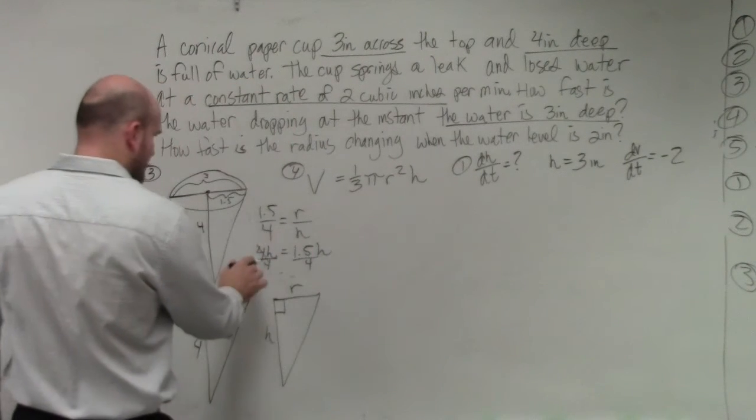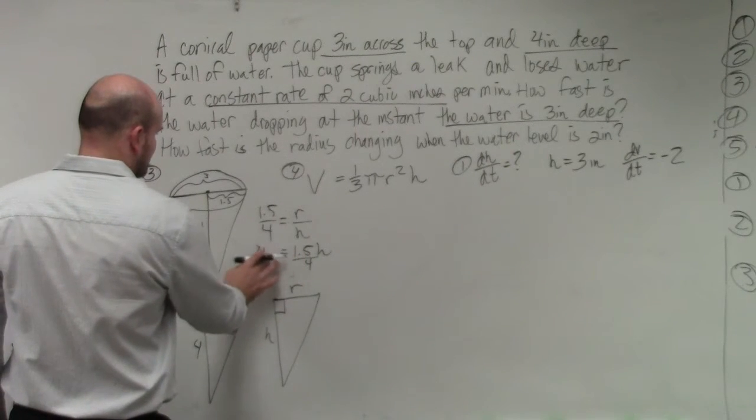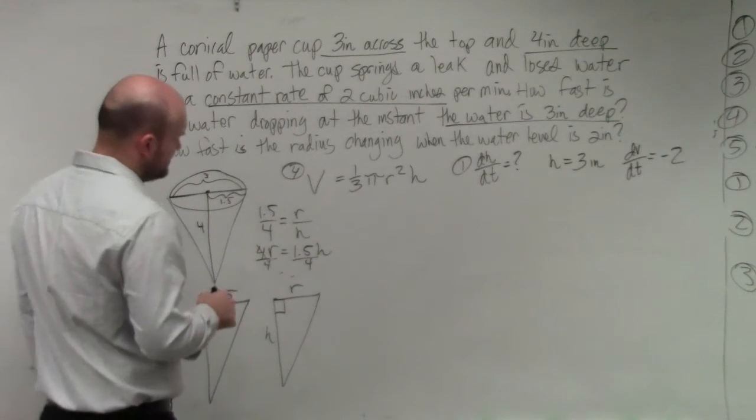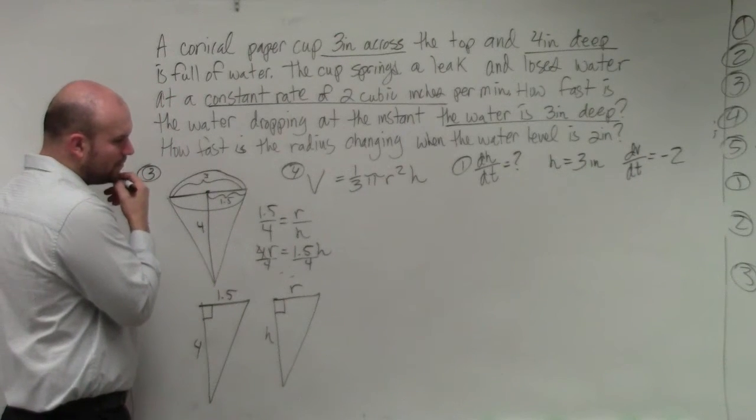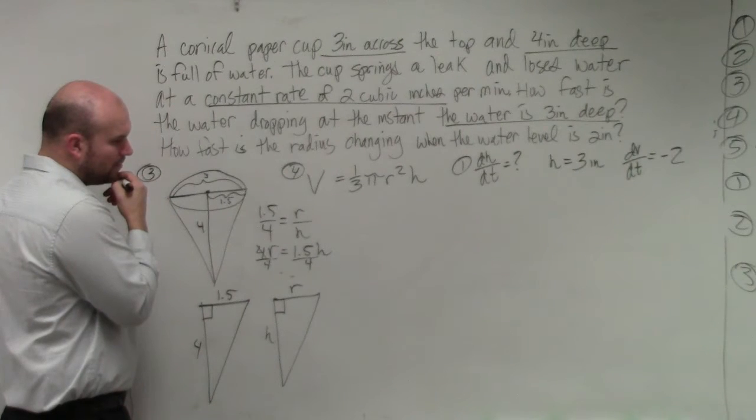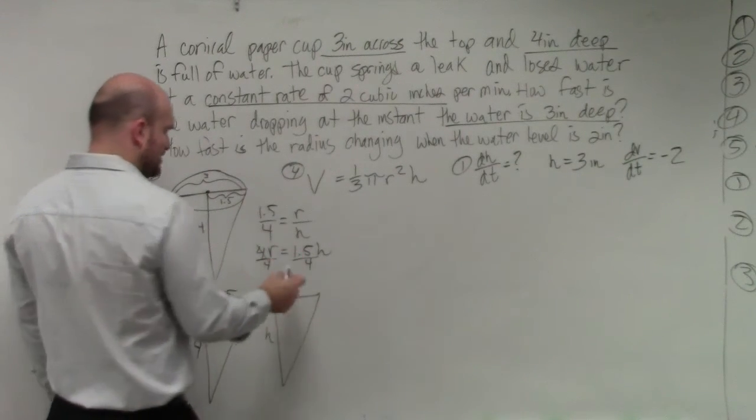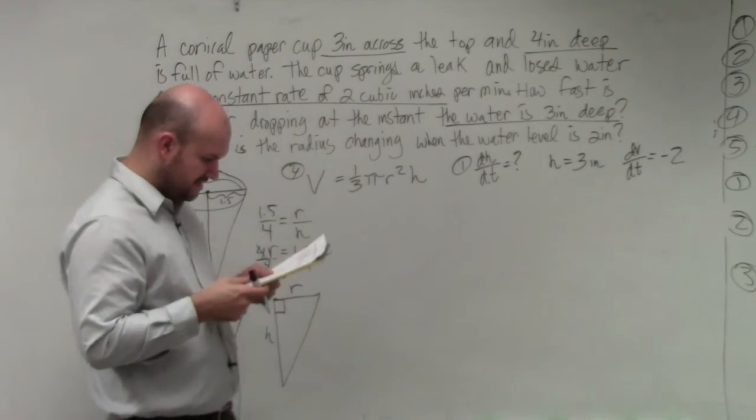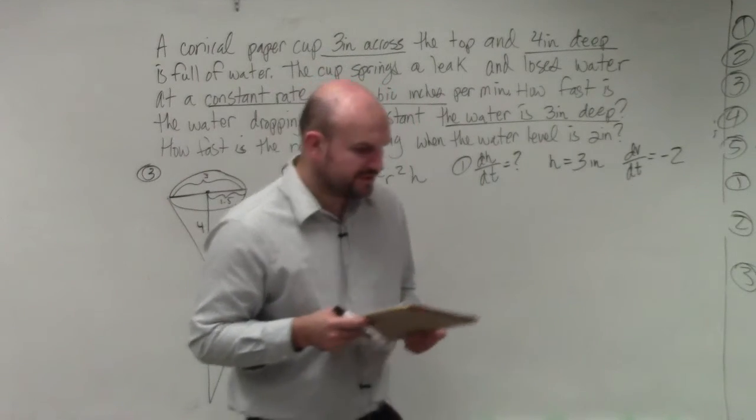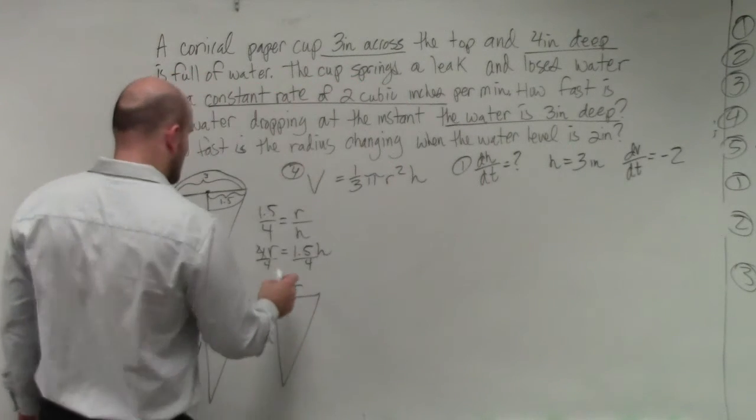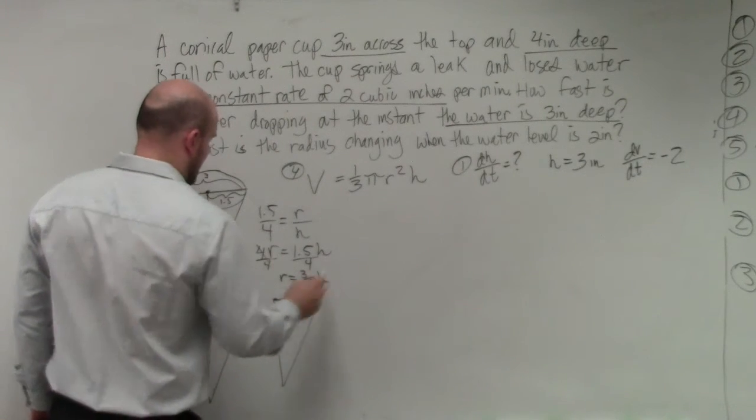What did I do? We have—why did I put two h's there? What the heck's wrong with me? Yeah, that's supposed to be an r right there. I wrote an h for some reason. So it's 1.5 divided by 4. Actually, I'll just leave that as—well, does it come into play? Yeah. Let's do—let's keep it as a fraction. So, therefore, r is going to equal 3/8 h.